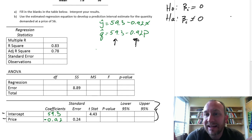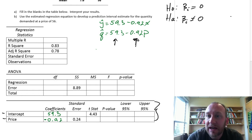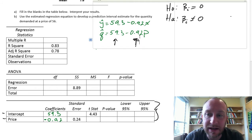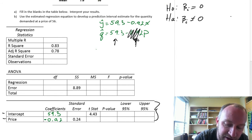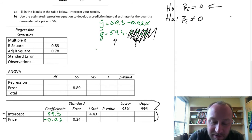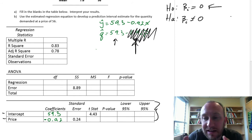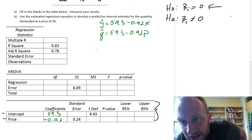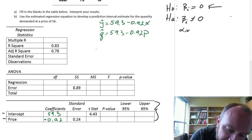Why? Because that tells you whether or not your independent variable is relevant. If we fail to reject the null hypothesis, that would imply that price, in this case, is not a predictor of quantity demanded. It means that whatever you've chosen as your independent variable, if we can't reject the null on the slope coefficient, that independent variable has no value in predicting y. We'll do these at the 0.05 level of significance.